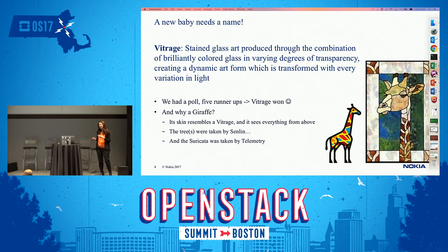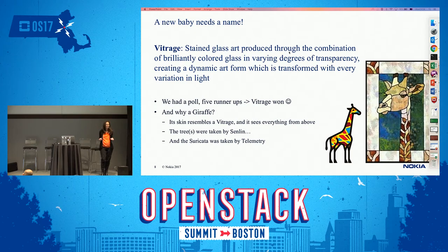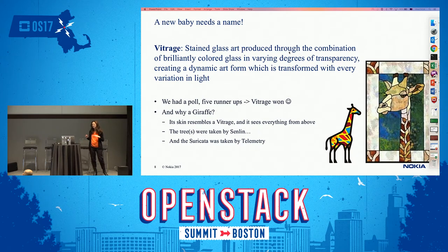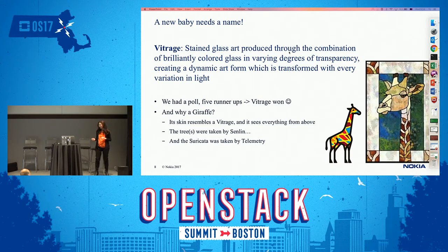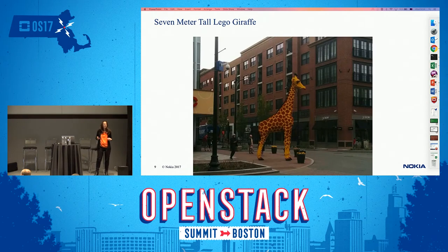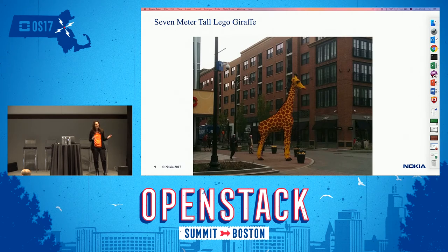We actually had other ideas for mascots. We wanted a tree — with big roots for root cause analysis and fruit for the deduced alarms — but they told us we can't get a tree. We also wanted a suricata, which is always on alert, but the telemetry project also wanted one. So our giraffe is best. This picture was taken yesterday in Boston: a seven-meter-tall giraffe made of Lego — so we know Boston welcomes our project.